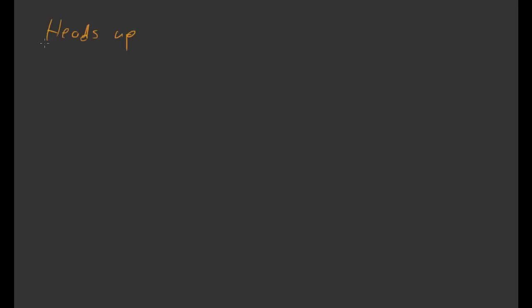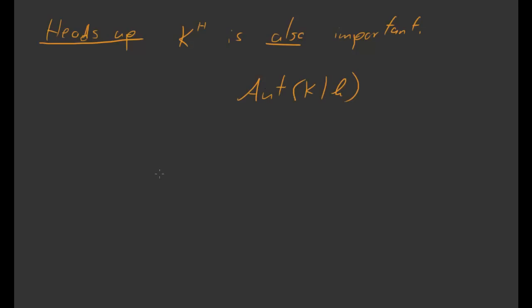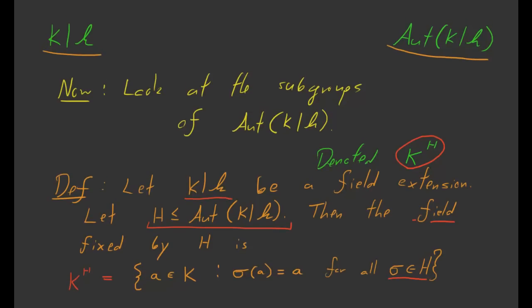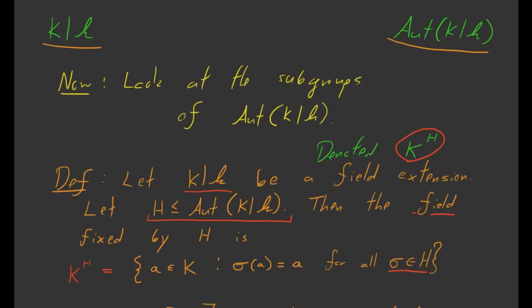As a heads up, K^H is also a really important object. I say 'also' because in the last video I said that Aut(K/k) was a really important object, and now I'm saying that the field fixed by H is also very important. So Aut(K/k) is the set of automorphisms of big K over little k, and K^H is the field fixed by H — both of these objects are going to make up the different parts of the Galois correspondence. All I wanted to do in this video was define K^H, and in the next video we'll start putting this stuff together to build the Galois correspondence.